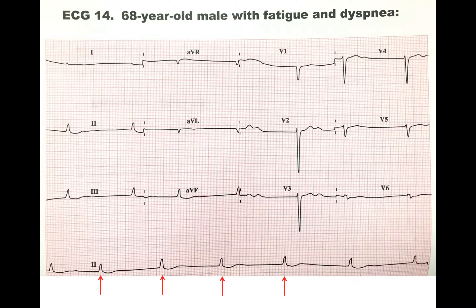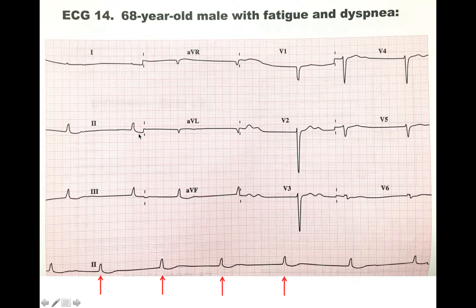Some things we look for in digitalis toxicity: digitalis is a drug that basically cuts off the AV node, and so it causes something like a complete heart block. Characteristic things to look for are sagging ST segment depressions, which you can see in lead 2 right here — it's like a little smiley face — and here as well. Another thing to look for is decreased T wave amplitude, seen here and in V3 and AVF.